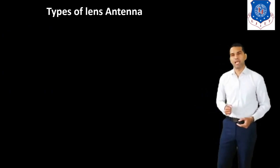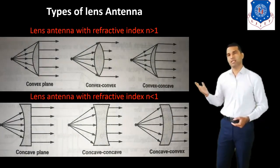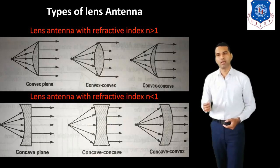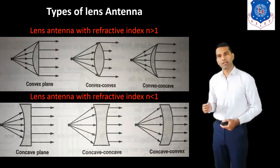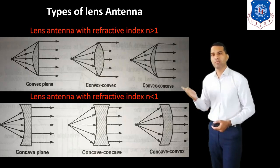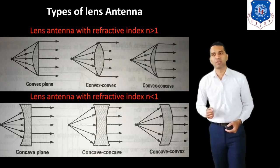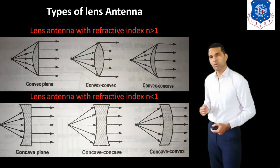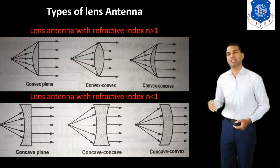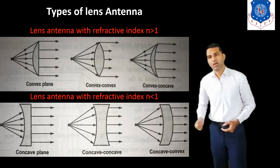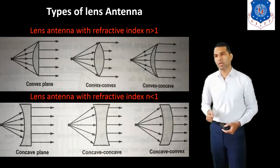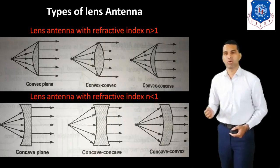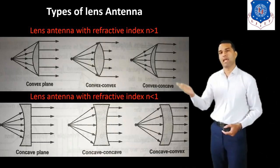Now we discuss the types of Lens Antenna. The types depend on the refractive index, denoted by n. If the value of refractive index n is greater than 1, then the types of lens antenna we can use are the convex-plane lens and the convex-convex lens. When the refractive index is less than 1, the types of Lens Antenna are the concave lens, the concave-convex concave lens, and the concave-convex lens.